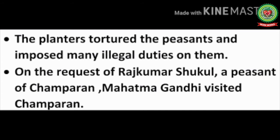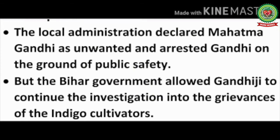When peasants refused to sell their crops at low rates, the British government committed many atrocities on the poor peasants. On Rajkumar Shukla's request, Mahatma Gandhi visited Champaran. The local administration declared Gandhi an unwanted person and arrested him on grounds of public safety, but the Bihar government allowed Gandhiji to continue the investigation into the grievances of the indigo cultivators.